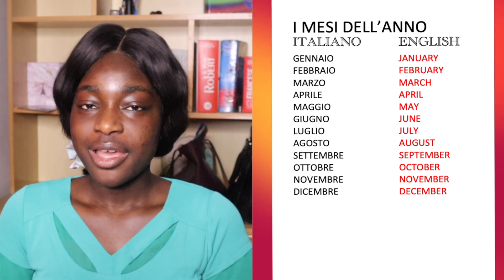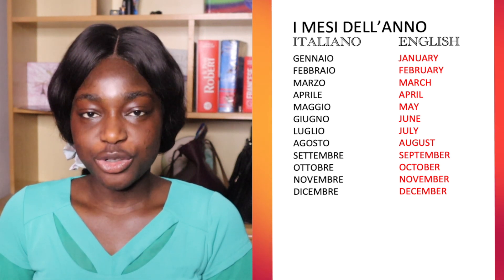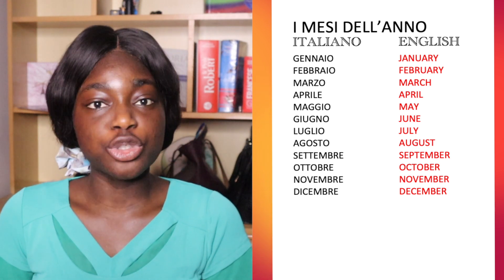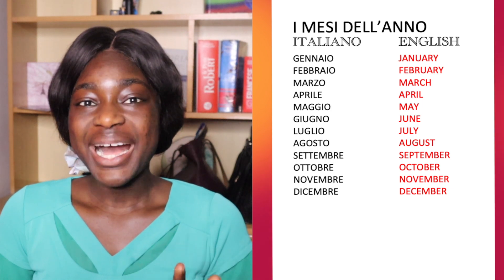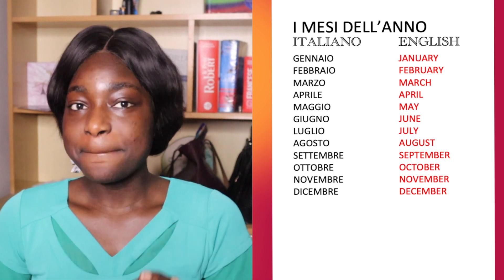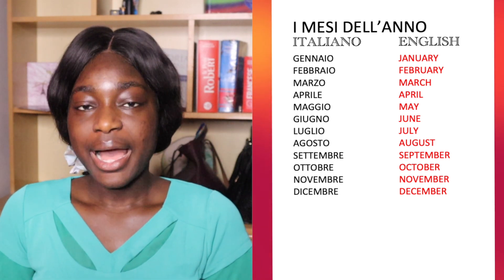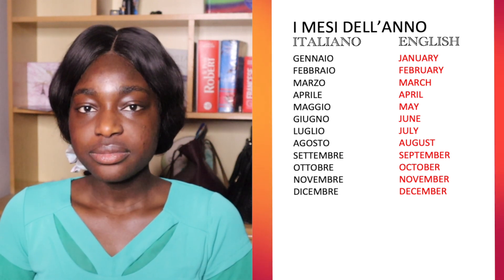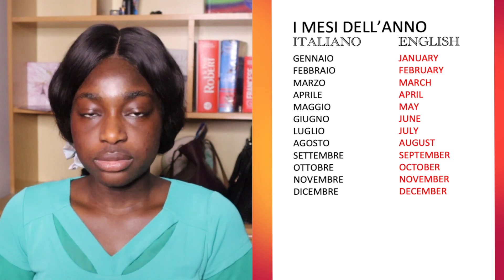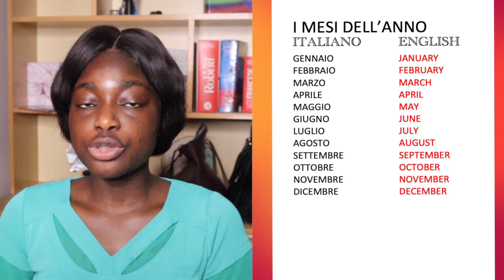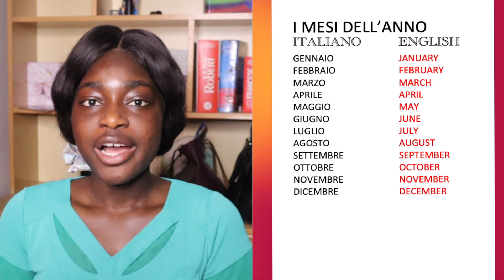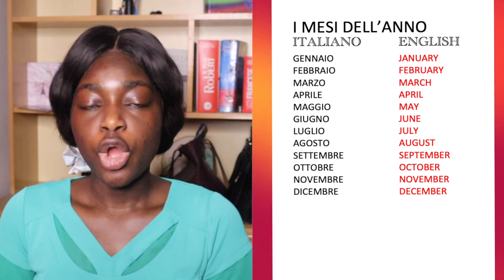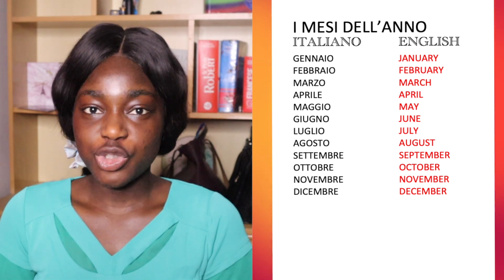Gennaio. Febbraio — note the 'z' sound. Marzo — not like English, it's marzo. Maggio — with a double G sound, maggio. Giugno — giugno. Luglio — luglio.